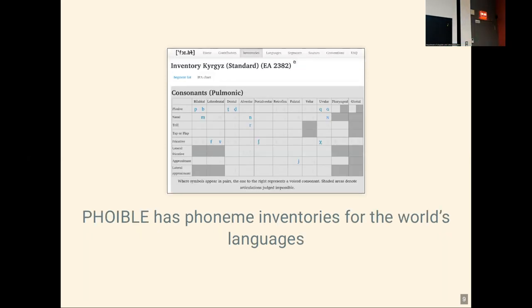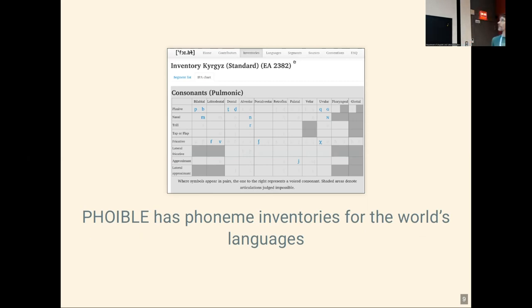PHOIBLE isn't a typical questionnaire-type typological dataset. Instead, it collects phoneme inventories, meaning that features in PHOIBLE are basically phonemes, and the values for these features are yes or no — whether language X has phoneme Y or not.